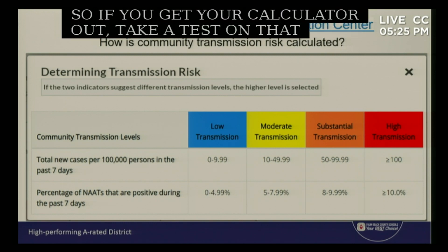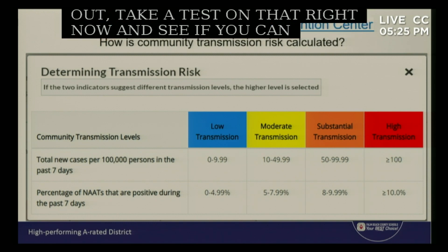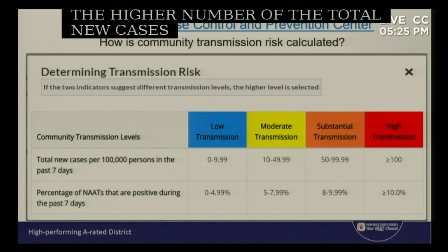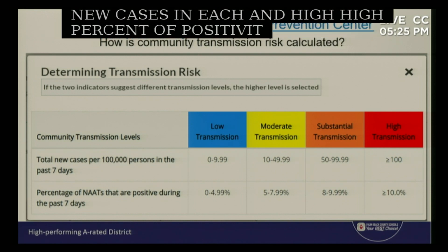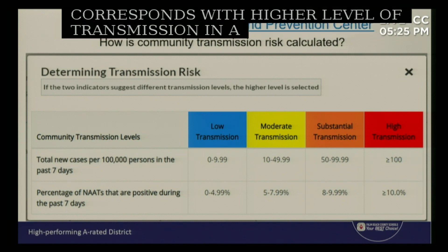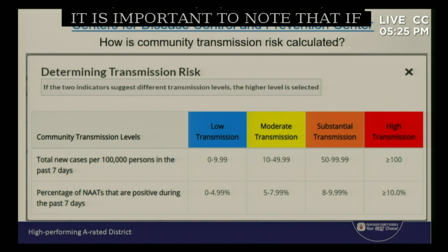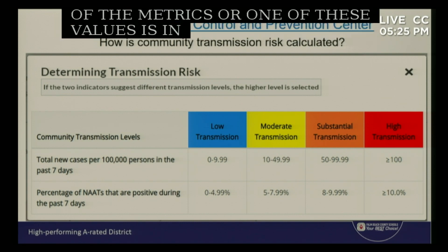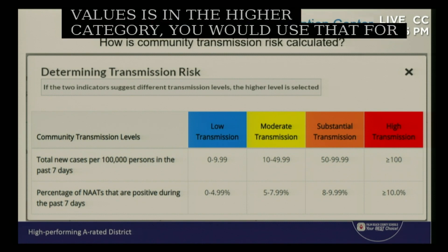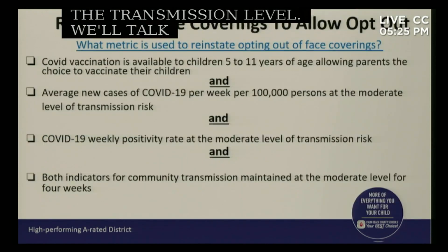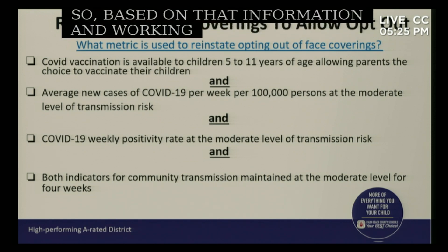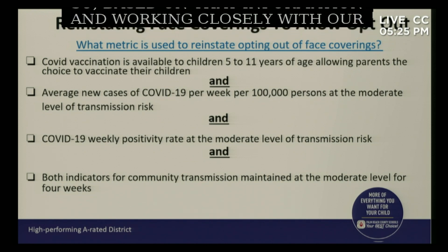A higher number of total new cases and a higher percent positivity corresponds with a higher level of transmission in a community. It's important to note that if either of these values is in the higher category, you would use that for the transmission level.